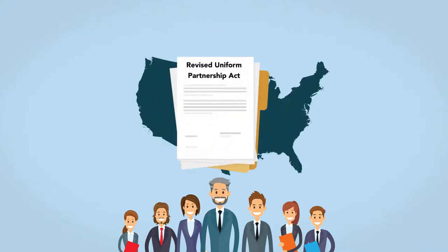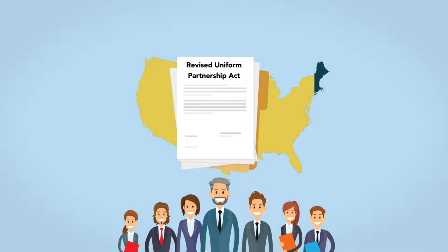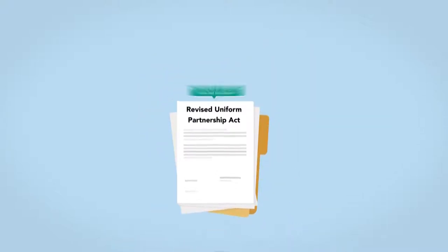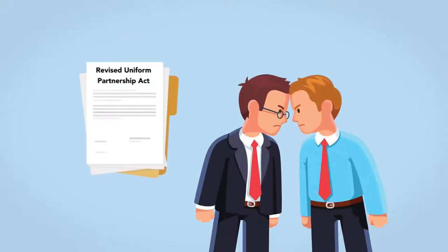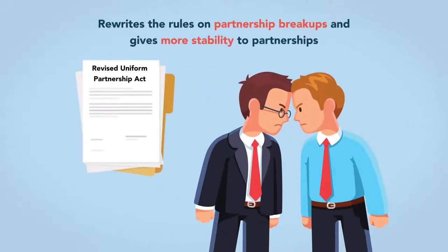The Revised UPA, written in 1997, has gradually supplanted the UPA across the country. The Revised Act is more detailed than the original UPA, but the acts share many similarities. The Revised UPA, however, rewrites the rules on partnership breakups and gives more stability to partnerships.